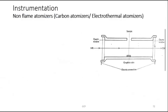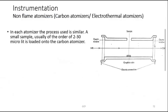Let's start with the carbon atomizer / electrothermal atomizer. In each atomizer the process is similar. We basically heat carbon in rod format. A small sample — typically 2 to 30 microliters — is loaded onto the carbon atomizer; the sample is injected or placed on a graphite tube through an opening.